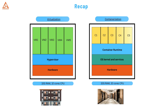Before we jump into containers, let's quickly touch upon something many of you might be familiar with: virtualization. Imagine you have a powerful physical server with 32 gigs of RAM and 32 cores of CPU. Virtualization, through a technology called a hypervisor, allows you to slice up that single physical server into multiple independent virtual machines, or VMs.